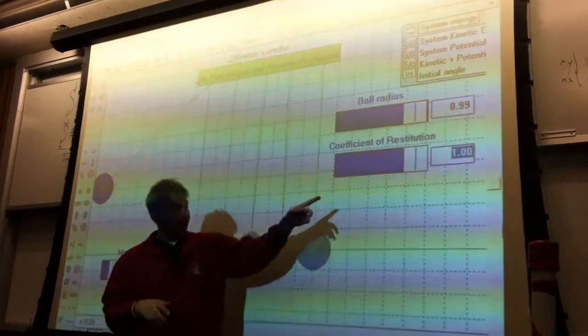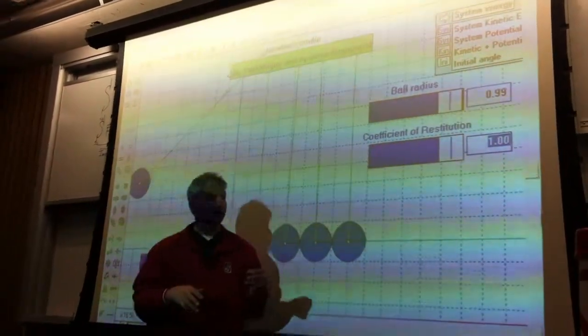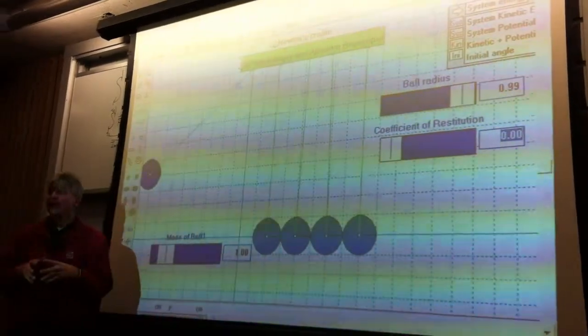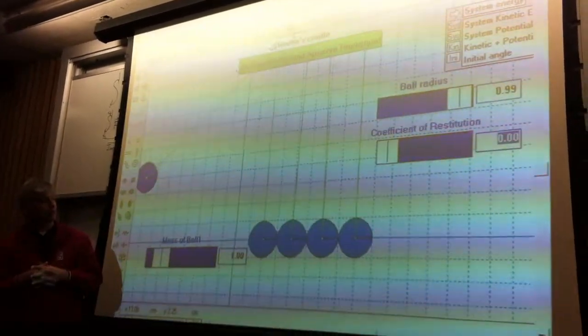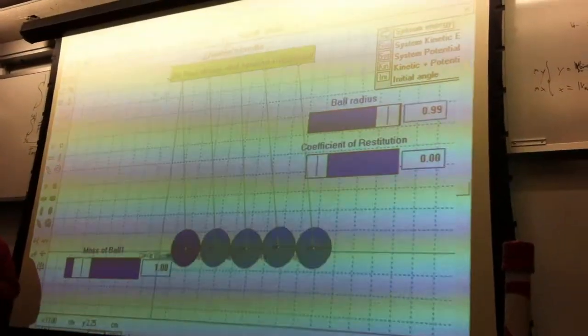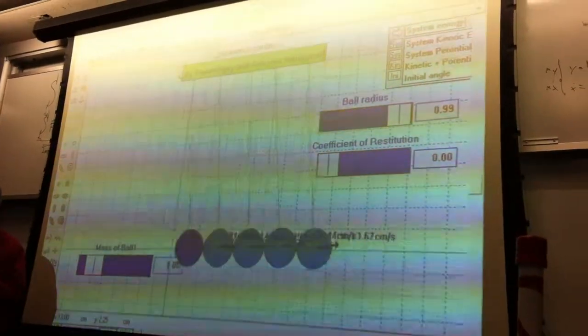If you go to zero, it's called inelastic collision and there's going to be energy losses. Click reset and I'll click run. And that's what it looks like for elastic collision.